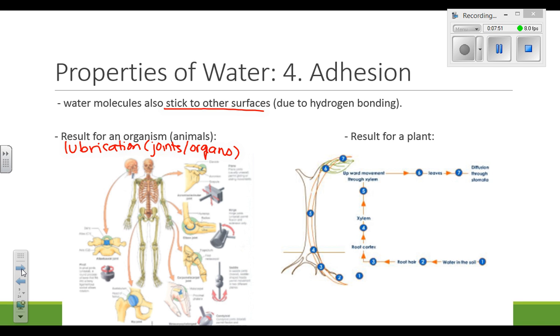The result for a plant is this same result as it was for cohesion. In this case, the reason that water moves upwards in a plant because of adhesion is because water is continuously sticking to the cells of the xylem, which is the tube that runs up the stem of the plant.